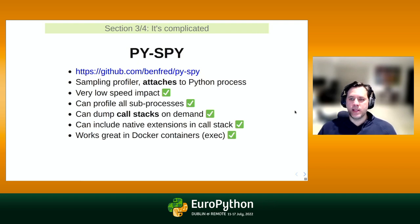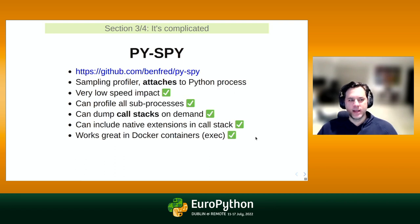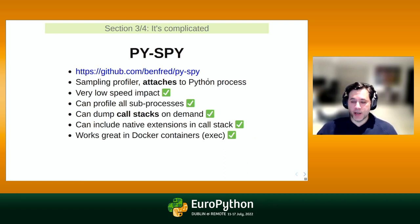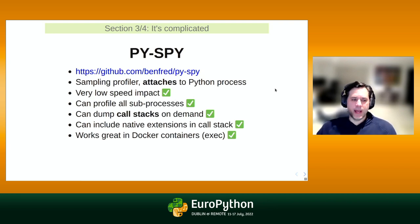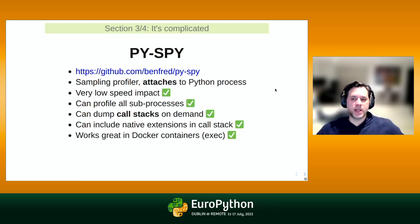My go-to in these scenarios is a really magical tool called py-spy. It's a sampling profiler that can attach to a running Python process — so you could use it in a production environment if a process seems hung. It has very low speed impact, can analyze subprocesses, can dump call stacks on command, and can include stack trace information from native extensions interleaved within the same output you'd be used to seeing.